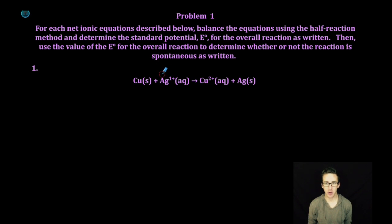As we take a look at problem number one for balancing redox reactions, it says for each net ionic equation described below, balance the equations using the half-reaction method and determine the standard potential for the overall reaction as written. Then use the value of the overall reaction to determine whether or not the reaction is spontaneous as written.